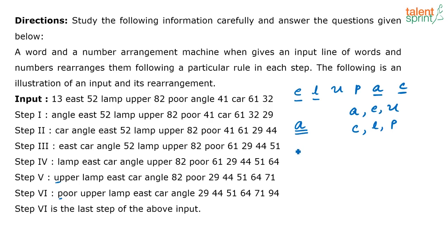The words starting with vowels are A, E and U. The words starting with consonants are C, L and P. So what they have done is: first the word starting with a vowel that comes first alphabetically is taken to the left. In the next step, the consonant word coming first alphabetically (C) is taken. Then the next vowel alphabetically (E), then the next consonant (L), then vowel, then consonant — alternating in alphabetical order. That is the pattern for the words.